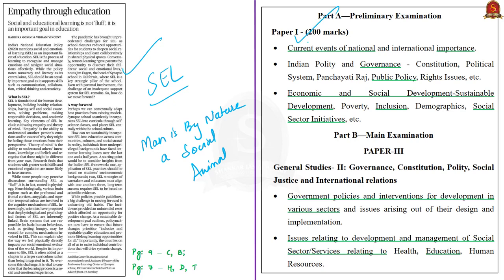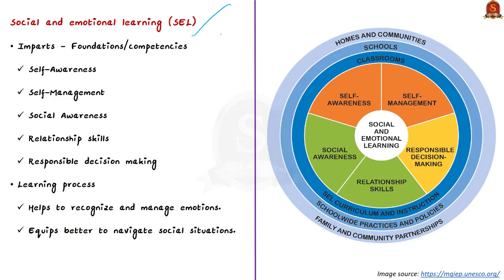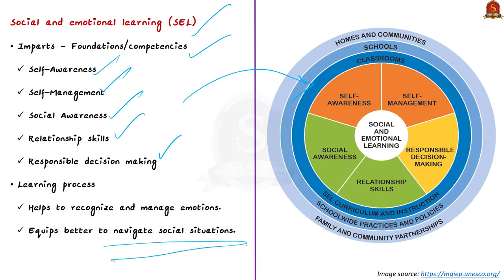SEL provides the foundations for self-awareness, self-management, social awareness, relationship skills, and responsible decision making. It helps an individual recognize and manage emotions and navigate social situations better. These five competencies are provided through SEL. It has two key elements: the cultivation of empathy — the ability to understand the emotions and feelings of a fellow person from their own perspective — and the theory of mind, which refers to the ability to understand a fellow person's intentions, knowledge, and beliefs, including those different from our own.